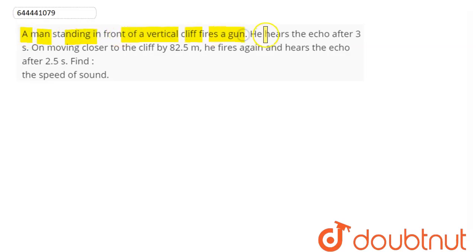A man standing in front of a vertical cliff fires a gun. He hears the echo after 3 seconds. On moving closer to the cliff by 82.5 meters, he fires again and hears the echo after 2.5 seconds. Find the speed of sound.